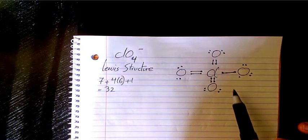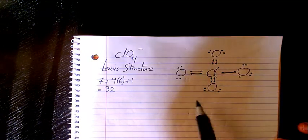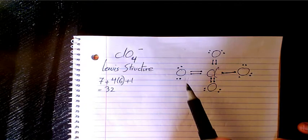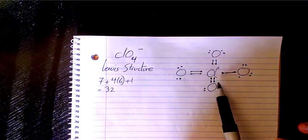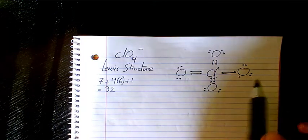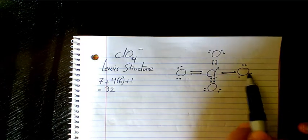So it doesn't obey that, but oxygen has to obey octet rule. So we have two, four, six, eight. Two, four, six, eight. Two, four, six, eight. That's very good. And here we have two, four, six and seven.